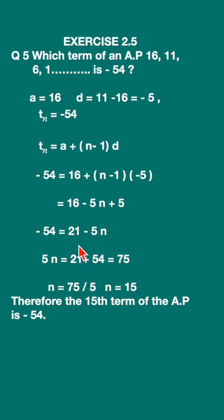16 plus 5 is 21, then bring it to the left hand side. Simplifying further: 5n = 21 + 54 = 75, so n = 15. Therefore, the 15th term of this AP is -54.